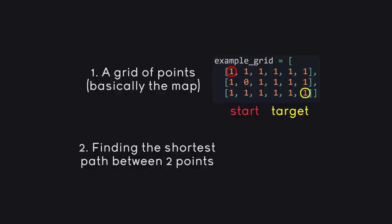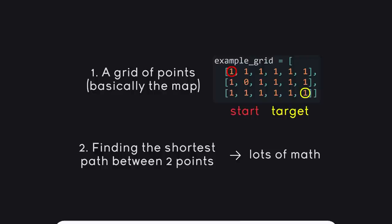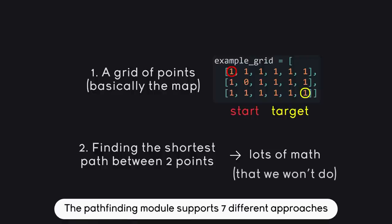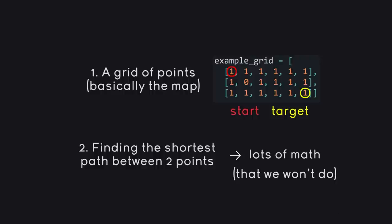Finding the shortest path is the difficult part, because it requires quite a bit of math. There are quite a few different mathematical approaches — the most famous is called A* — but there are quite a few more, and if you want to get into the math it can get quite complex. But with that we can get started with the pathfinding module.